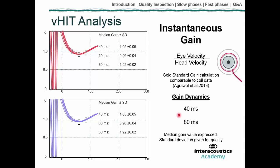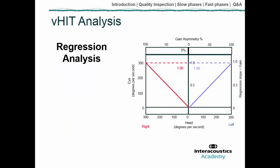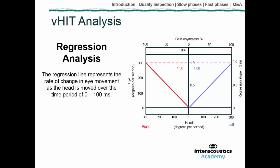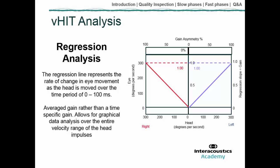For beginners, I suggest focusing on gain at 60 milliseconds as this is most useful. The instantaneous gain at 60ms is a median gain with associated standard deviations, which are important for assessing recording quality. In addition to instantaneous gain, a second graph shows regression analysis, which describes the rate of change in eye movement as the head is moved over the 0 to 100 millisecond time period — essentially an average gain over a wide time window.